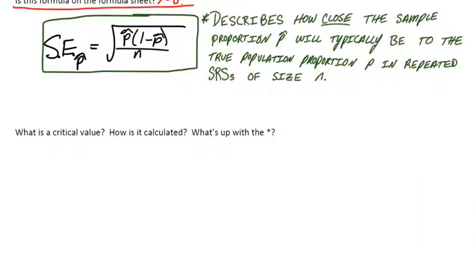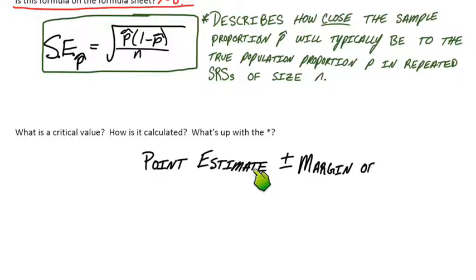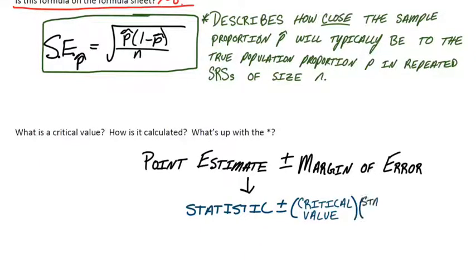Scrolling down here, the next part says, so what's a critical value? How's it calculated? And what's up with the little star? So the general idea for a confidence interval is based on this point estimate plus minus the margin of error. More specifically on the formula sheet, that's our statistic, whether it's x-bar or p-hat, plus or minus our critical value times the standard error of a statistic, which we just referred to. So then specific to proportions, how does each piece sort of fall out here? The statistic that we'll use, our point estimate, is p-hat. That's our best guess for what the true p is.